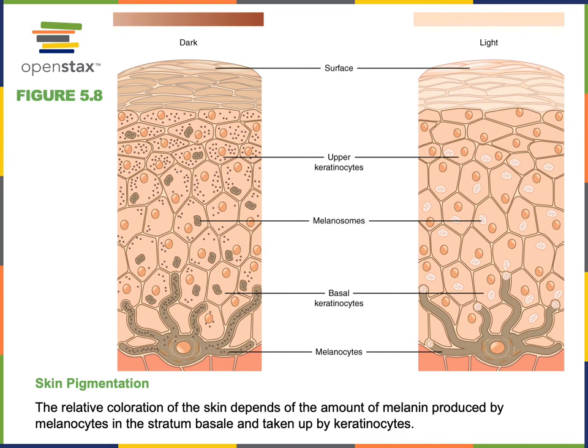A tan results from increased melanin production. In response to light exposure, melanocytes produce more melanin, leading to darker pigmentation of the skin. Freckles and moles are examples of local increases in melanin accumulating within a region of the skin.